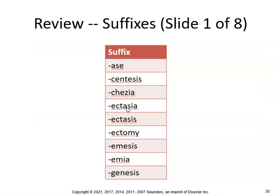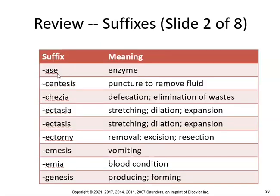Now for a suffix review. ACE is an enzyme. Centesis means puncture to remove fluid. Chesia means defecation or elimination of waste. Ectasia or ectasis means stretching, dilation, and expansion. Ectomy is removal. Emesis is vomiting. Emia is a blood condition, like anemia. And genesis means produce or forming.